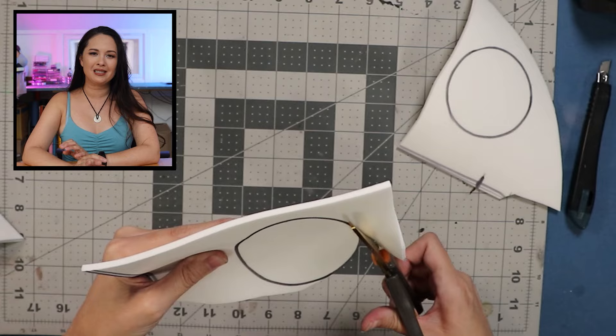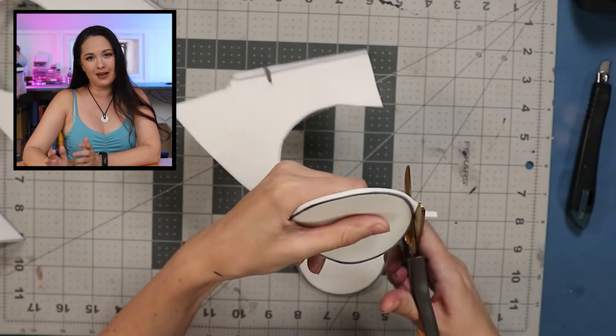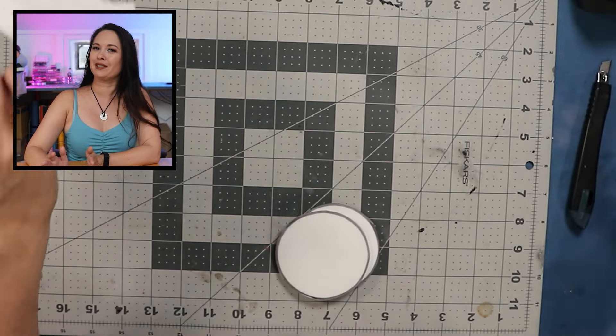For the circles, I'm actually going to sand the sides down anyway, once I attach the spirally part, so I'm just roughly cutting them out with scissors, because I work with scissors best.